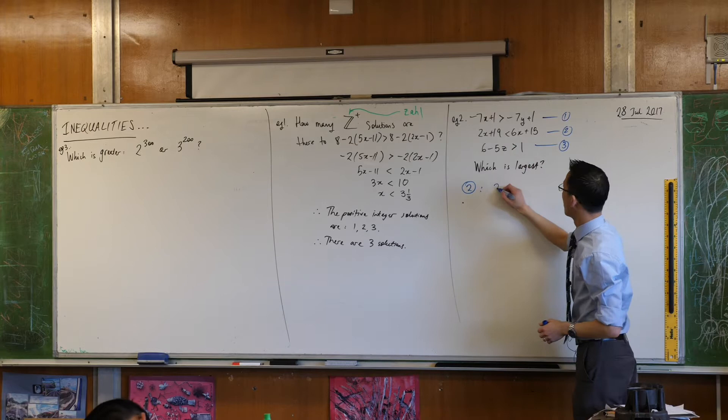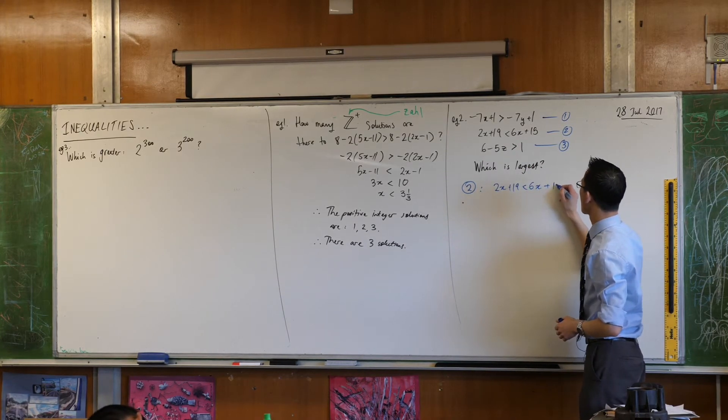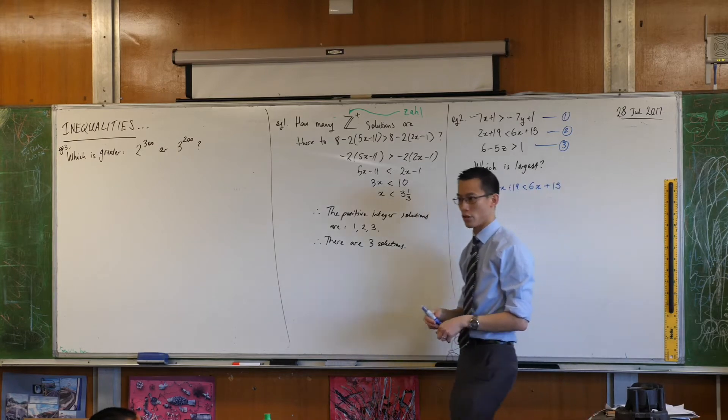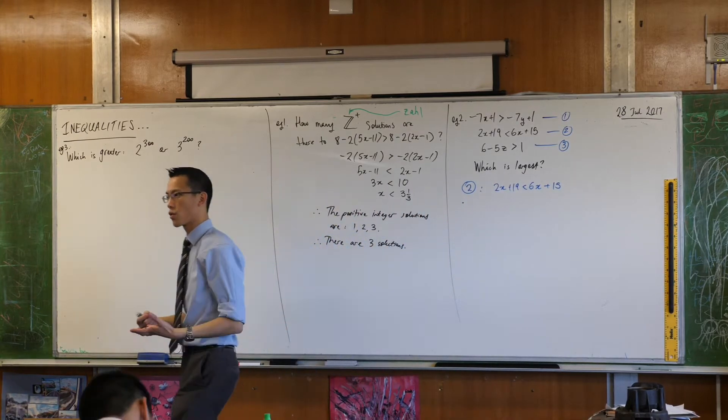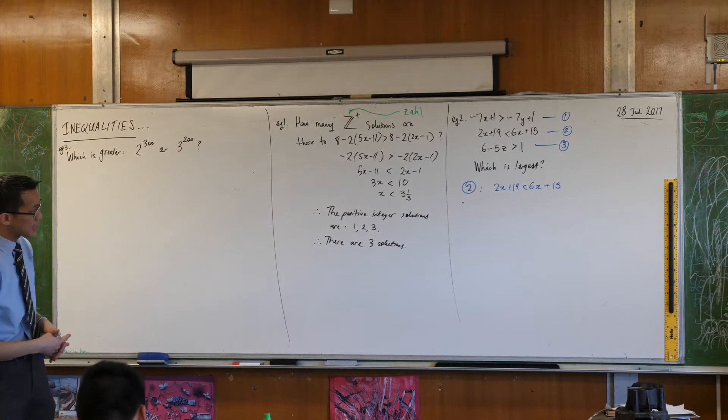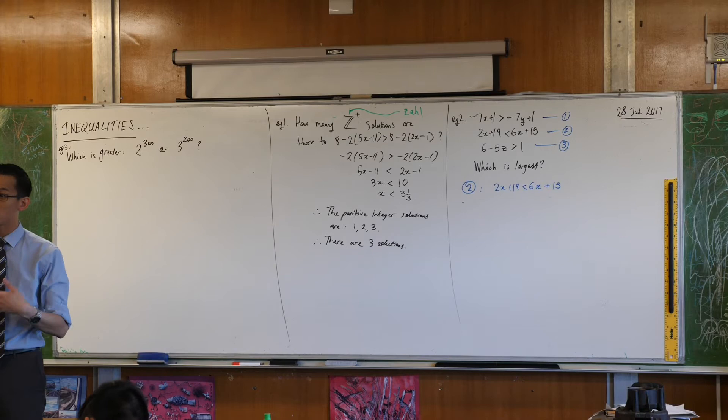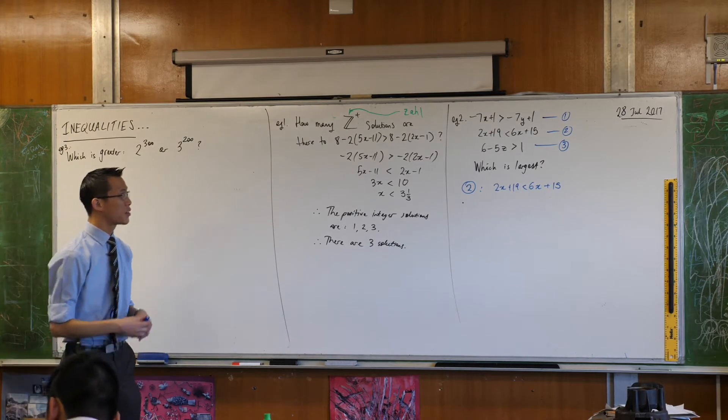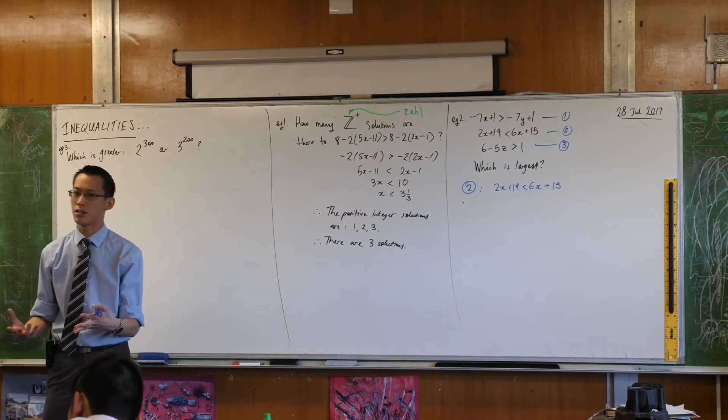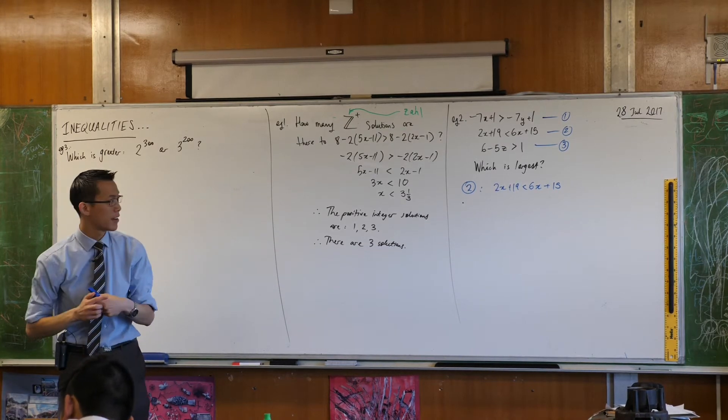If I just start by writing that out, one of the reasons why I've started with this one rather than equation one is it's what we call an inequality in one variable. Do you notice it's only got x's in it? By the same logic, inequality three only has one variable - it's only got z. Inequality one has two variables, x and y, so immediately it's more complicated and I look at it and think I'll come back to that one, and I will.